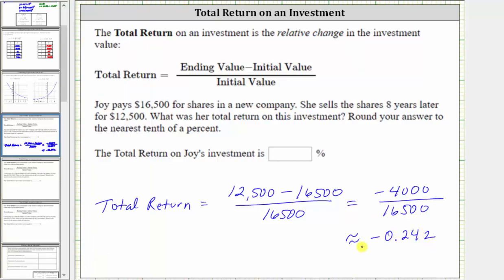We had to round this to three decimal places because when converting to a percentage, we will then have one decimal place. So as a percentage, we would have negative 24.2%.